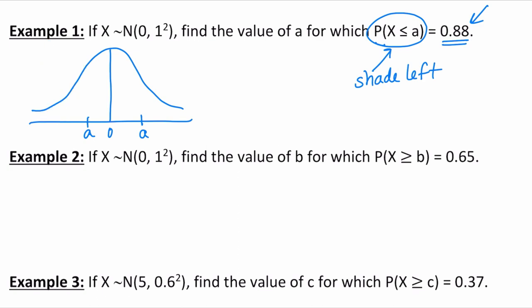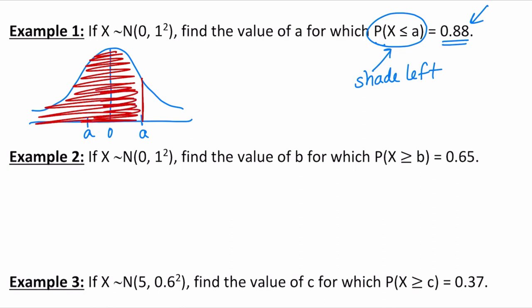So a is to the right of the mean. This is important because it gives you a visual of what you're doing. Also, if you're preparing for an exam like the IB exam, you'll get partial points for showing your work, and that diagram counts. Remember, a is not to the left of the mean — it's to the right.